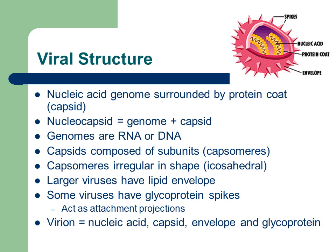The capsid, or protein coat, is composed of subunits called capsomeres, which can be irregular in shape, giving viruses various forms. The larger viruses have a lipid envelope, and some viruses have glycoprotein spikes on their surface. These glycoprotein spikes act as attachment projections, allowing the virus to attach to the cell it infects. The virion is the nucleic acid plus the capsid, along with the envelope and glycoproteins.